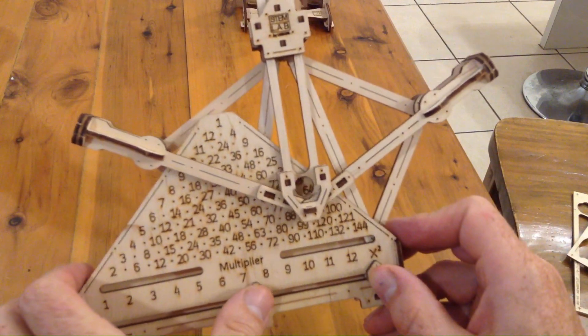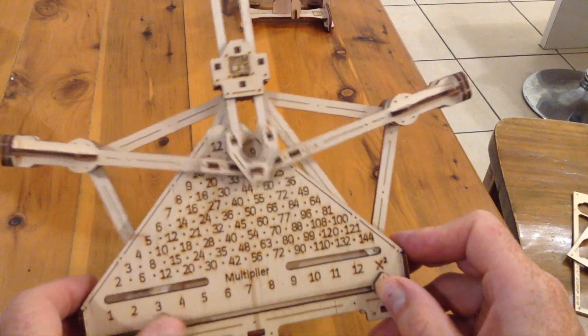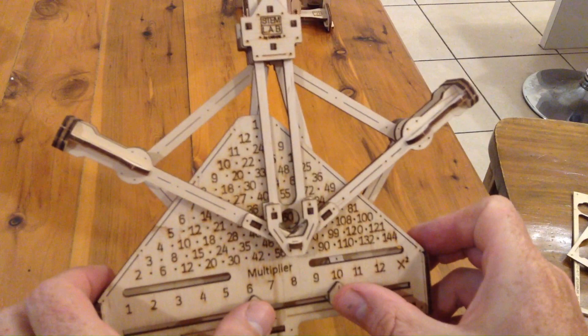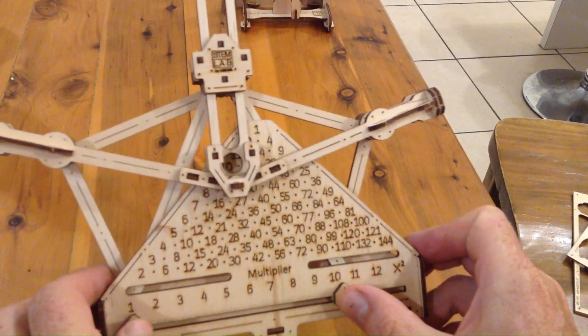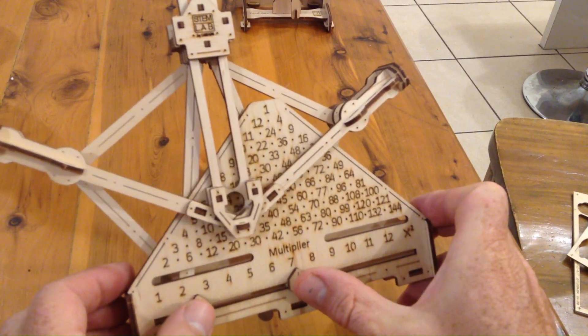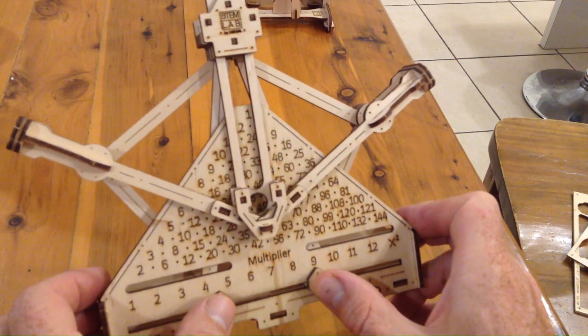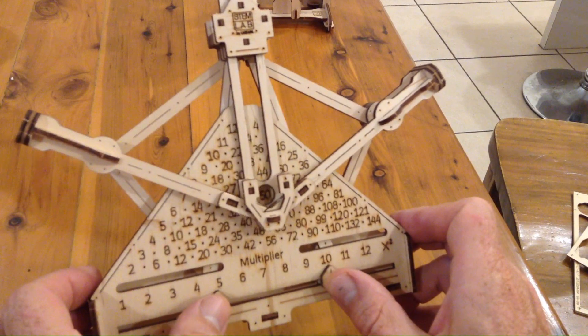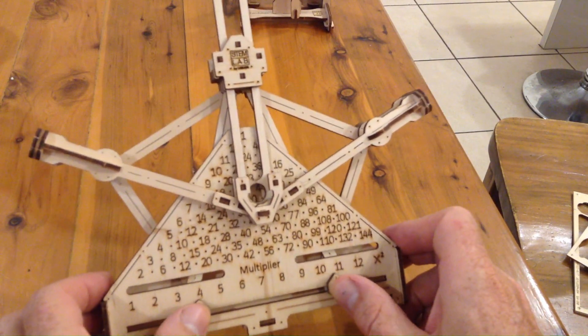It's really good for seeing the different patterns of numbers, how they follow lines up and down the triangles. Tens, for example, go up and down there. Just really a pretty cool little thing to help you learn your tables or to practice them in a more kinesthetic sort of way.